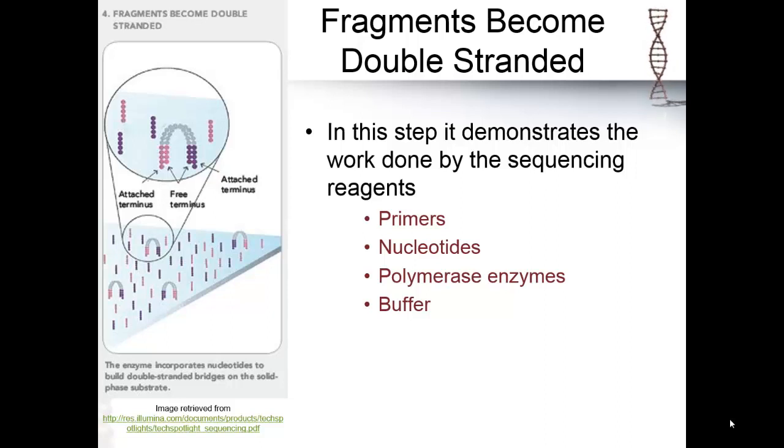The reagents needed for sequencing are added. These are primers, which start sequencing; nucleotides to form the new sequence; polymerase to actually sequence the nucleotides together; and a buffer to keep the pH at an optimum level for the enzymatic reaction.